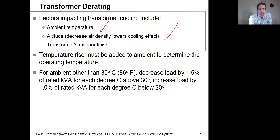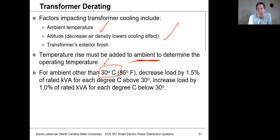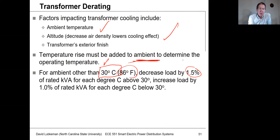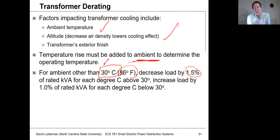As far as operating temperature, we work everything out with respect to the ambient temperature. These calculations normally assume a 30-degree C ambient, which corresponds to 86 degrees Fahrenheit. If we're going to operate with higher ambients for whatever reason, we should be derating the transformer. For every degree C above 30, we ought to be decreasing the loading by 1.5% of its rated kVA. Conversely, if we're operating under colder conditions, we can actually uprate it a little bit.